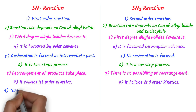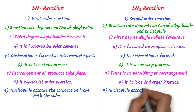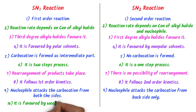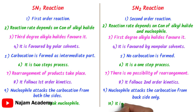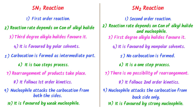Ninthly, in SN1 the nucleophile attacks the carbocation from both sides, although backside attack dominates. While in SN2 reaction, the attack of the nucleophile takes place from the backside only. Tenthly, SN1 reaction is favored by a weak nucleophile, while SN2 reaction is favored by a strong nucleophile. These are some important differences between SN1 and SN2 reactions. I hope that you have learned all about SN1 reaction and SN2 reaction.